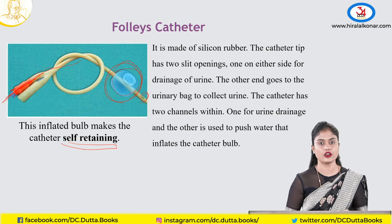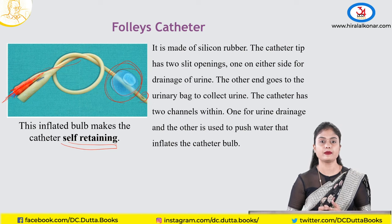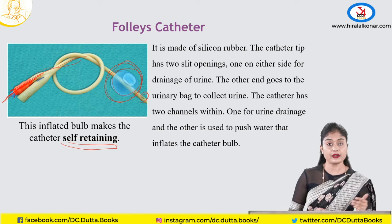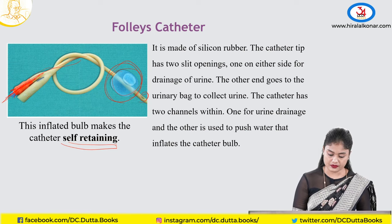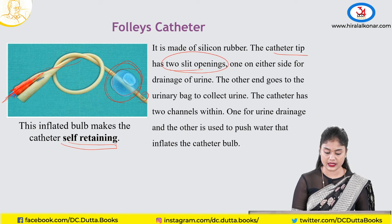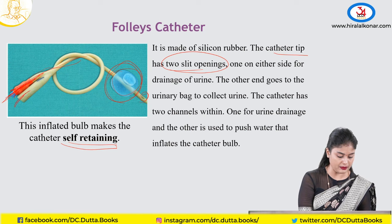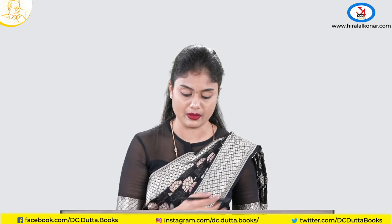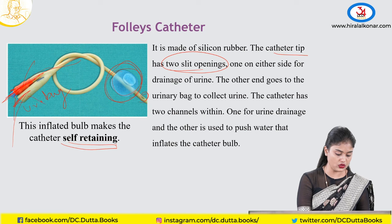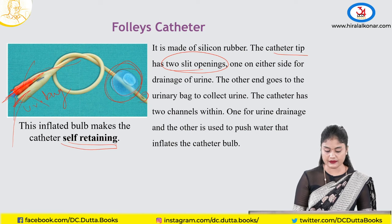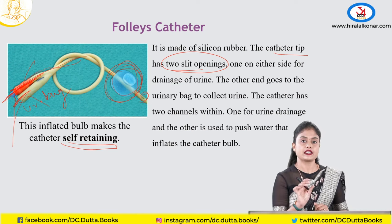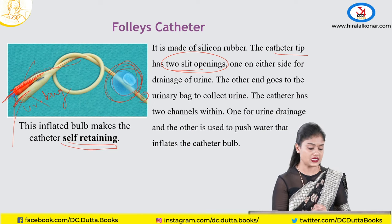The uses of the rubber catheter can also apply to the Foley's catheter. Since it is self-retaining and can be left for a longer time — 6 hours or more — we prefer it preoperatively for caesarean sections or abdominal hysterectomies. One channel drains urine into a urobag; the other is used to push distilled water to inflate the bulb, which cannot pass through the urethra by itself once inflated with around 10 ml.